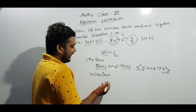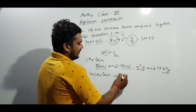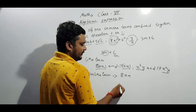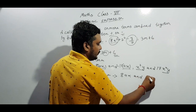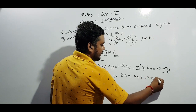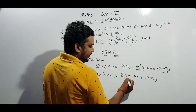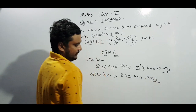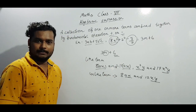In unlike terms, for example 8ax and 12xy — here ax is there and xy is there, so the variables are different. This is called an unlike term.